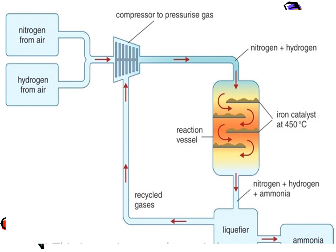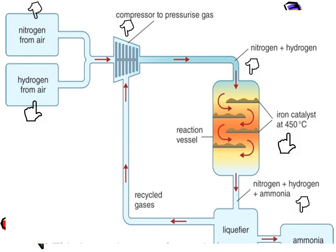The flow sheet diagram will help you to get a clear picture of Haber's process. Hydrogen and nitrogen from air are compressed to about 200 atmospheres in a compressor. The compressed gases then flow towards the converter fitted with beds of iron catalyst at 450 degrees Celsius, where the reversible reaction takes place, producing gaseous ammonia. The ammonia is liquefied by cooling and stored in containers under pressure, while unreacted hydrogen and nitrogen are recycled to be used again.